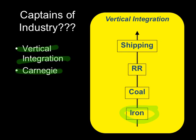Then, what do you burn to get the fire hot enough? Coal. So Carnegie goes out and he buys himself some coal mining companies. He uses the iron and the coal to make steel. Once his steel is built, he has to get it to his customers, so he goes out and buys himself some railroad companies.